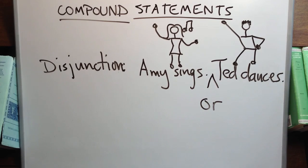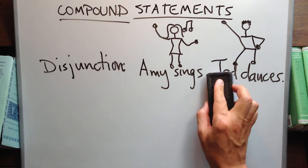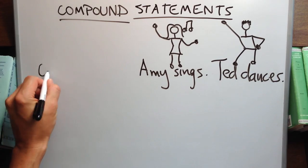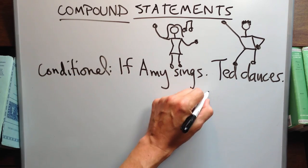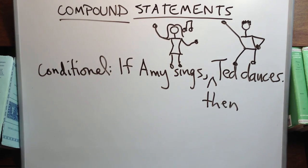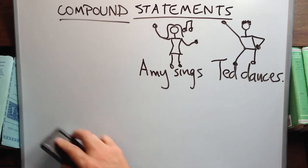Another kind of compound statement is a disjunction brought together with an OR. A third is a conditional. If, then. If Amy sings, then Ted dances.